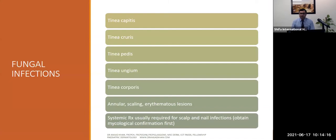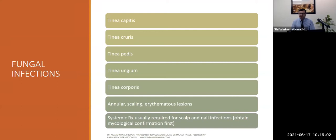Moving to fungal infections — these are the basic ones most of us will come across in ER. We are considering ER presentations only. Tinea is named by the body part involved: capitis for the head, cruris, pedis, unguium, and corporis for different body parts. Most fungal infections are annular, scaly, erythematous lesions — red scaling annular or disc-shaped lesions. Treatment depends on presentation, whether topical or oral, which we'll go through separately.